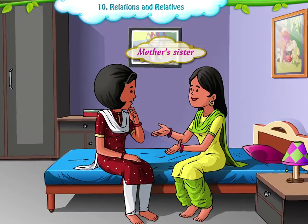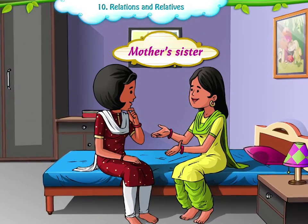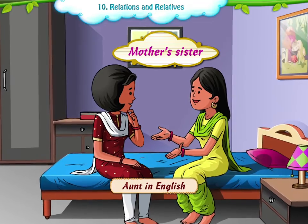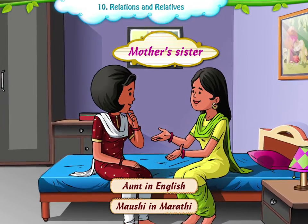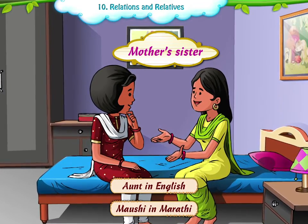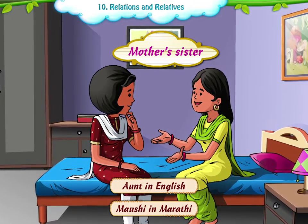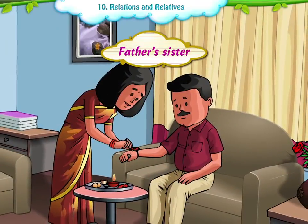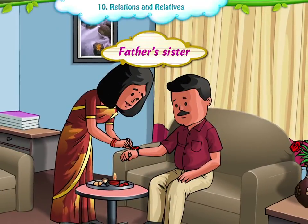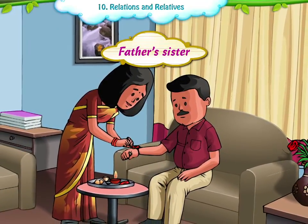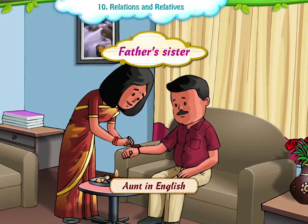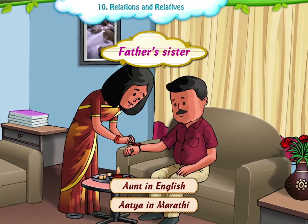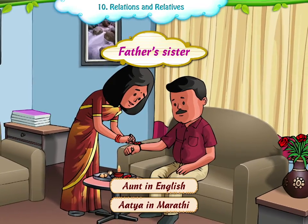Our mother's sister is Aunt in English and Maoshi in Marathi. Our father's sister is also called Aunt in English but Aatya in Marathi.